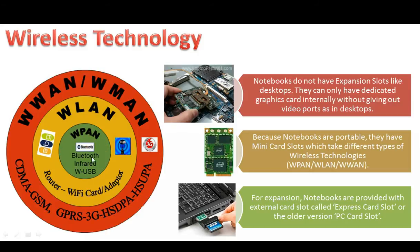Wireless PAN — Bluetooth, infrared — is for within a small area, maybe five to ten feet, for transferring images or MP3s to your cell phone. Wireless LAN is for internet within your local area, within your premises, your office, or your house. Wireless WAN — wherever you go, for example traveling in a train to a different city — if your cell phone works there, you would be able to operate internet through wireless WAN. Mind it though: this internet is going to be slower than wireless LAN. Wireless LAN gives the fastest broadband speeds.